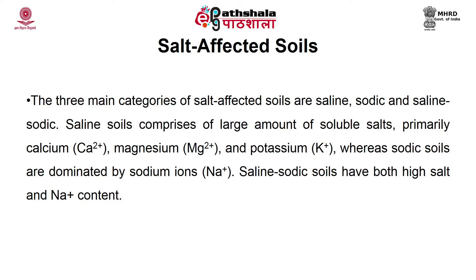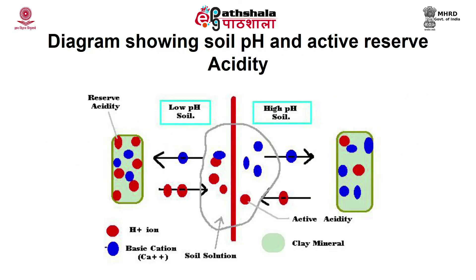Saline soil comprises large amounts of soluble salts, primarily calcium, magnesium and potassium. Whereas sodic soil is dominated by sodium ions. Saline-sodic soil has both high salt and sodium content. Concentration of salt in soil influences the structure, porosity and plant-water relations, which ultimately leads to reduced productivity. Acidity or alkalinity is an important parameter that affects various other chemical, physical and biological properties of soil.